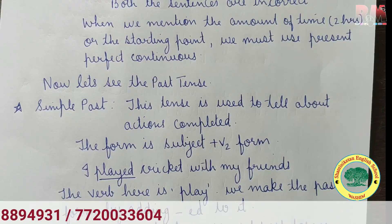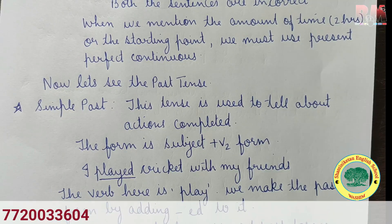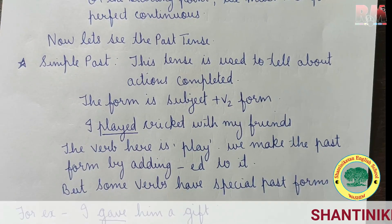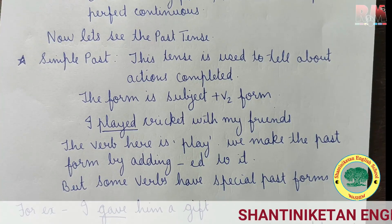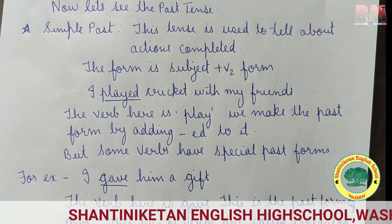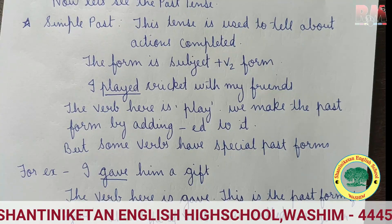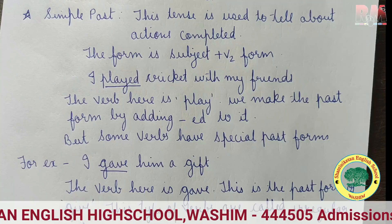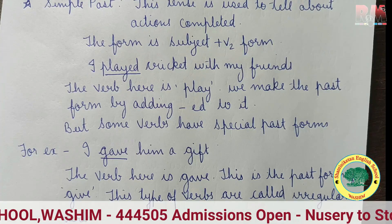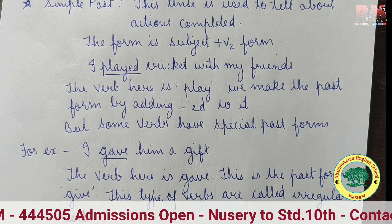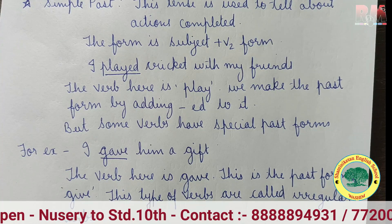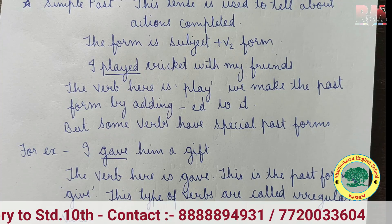This is all about present tense. Now let's see the past tense. Simple past tense is used to tell about actions completed. The form is subject plus V2. For example: 'I played cricket with my friends.' We make the past tense form by adding ED to the verb. But some verbs have special past forms — for example, 'I gave him a gift,' where 'gave' is the past form of 'give.' These are called irregular verbs.